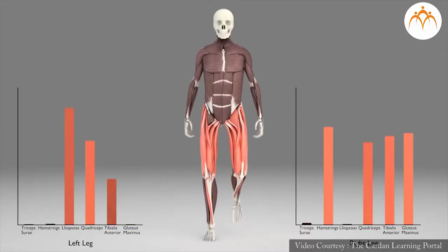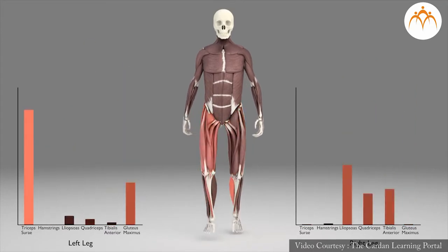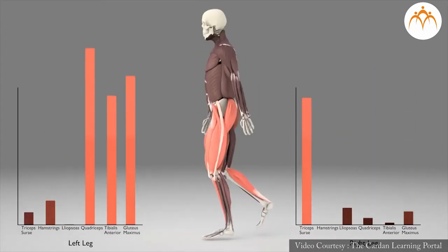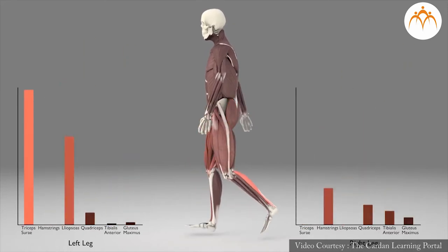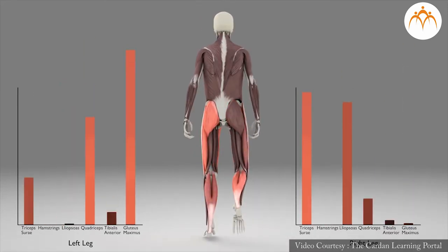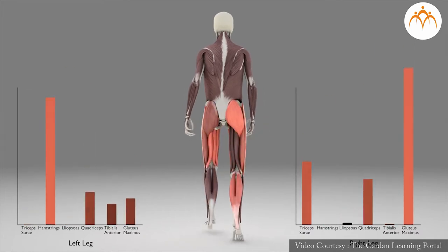We know that our body can perform a variety of movements. When we perform any movement like picking up an object, sitting down or getting up, or simply turning our body or body parts sideways, or moving from one place to another, we are using a variety of muscles. All movements are possible because of the ability of these muscles to undergo controlled contraction and relaxation.